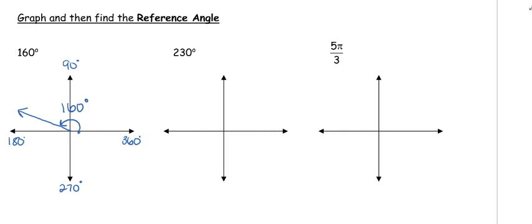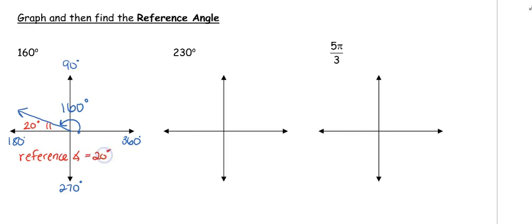Now the reference angle is the angle made with the x-axis. It's really important that we're always looking from the terminal side to the closest x-axis — not the y-axis, we're never going to go to the y-axis. So if from here to here is 160, what is this angle measure? Well, we're just 20 degrees shy of 180, which means this is going to be 20 degrees. So here our reference angle is equal to 20 degrees.